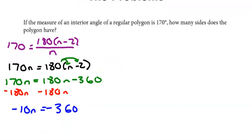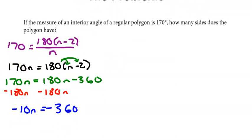To finish solving this equation, I need to divide both sides by the coefficient of n, which is negative 10. And negative 360 divided by negative 10 is 36. So, this polygon has 36 sides.